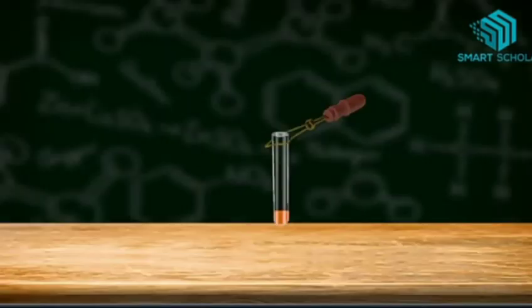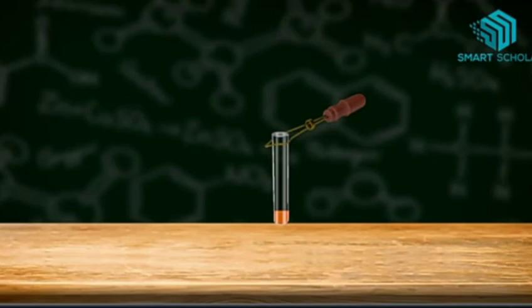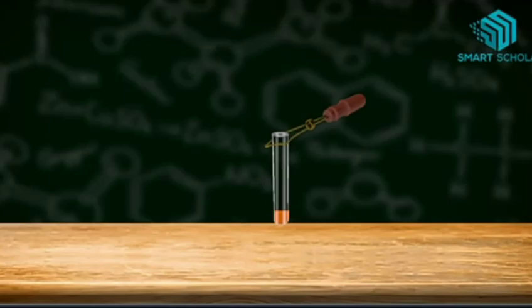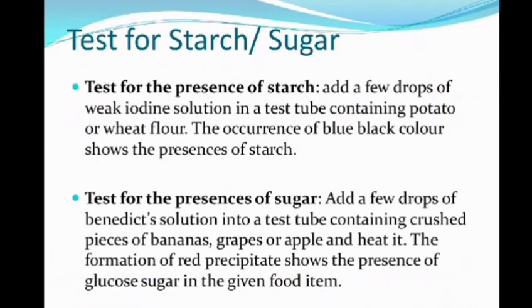When the sugar solution reacts with Benedict's solution, it turns orange. If a food sample such as crushed banana or grapes is used, it will form red or orange precipitates confirming the presence of sugar. Here, since we have a solution, the color change to orange confirms the presence of sugar. In summary, we can test the presence of carbohydrates in food by testing for starch using iodine or for sugar using Benedict's solution.